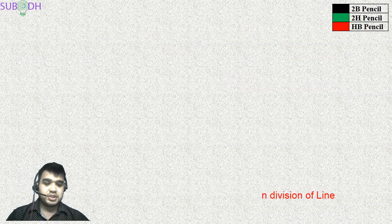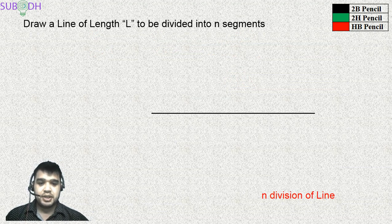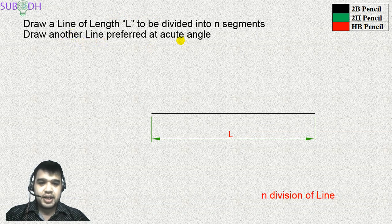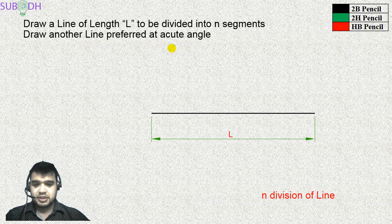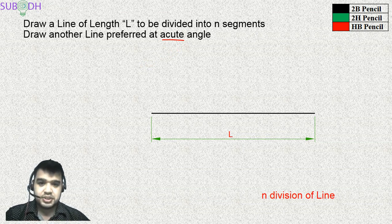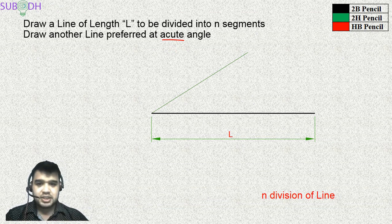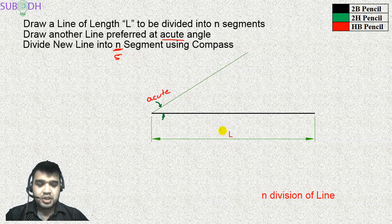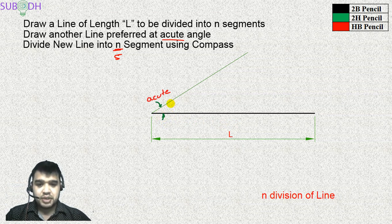Let's start with N-division of a line. We begin with a line of any given length. From one end of this line, I draw another line at an acute angle. Using an acute angle here is not compulsory, but there is an advantage to it which we will discuss in a moment. I am keeping N as 5, meaning I want to divide this line into 5 equal divisions.